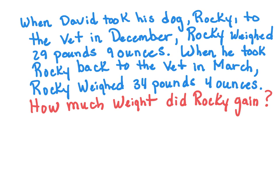Next one, when David took his dog Rocky to the vet in December, Rocky weighed 29 pounds 9 ounces. When he took Rocky back to the vet in March, Rocky weighed 34 pounds 4 ounces. How much weight did Rocky gain? I used to have a dog named Rocky. He was all black. Oh, he was so loving and so cute. Okay, so what we want to do is maybe a tape diagram would help. So I'm going to set up my first tape diagram.